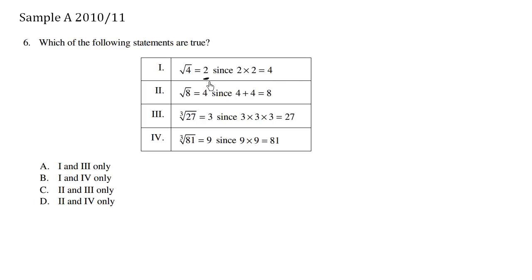The answer times the answer should equal the value underneath the radical sign. This here is 4. The answer times the answer, 2 times 2, indeed is equal to this radicand. The radicand is the number underneath the radical symbol. So this is correct.